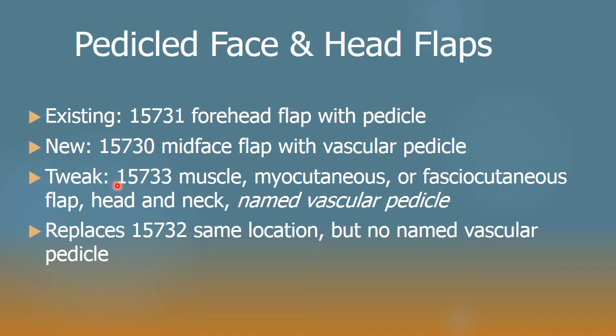There is a new code 15733, which is a muscle, myocutaneous, or fasciocutaneous flap for the head and neck — somewhere besides the forehead or mid-face — and now, as of 2018, built into the descriptor is a named vascular pedicle. This replaces 15732, which was the same location, head and neck, and actually contained the same terminology regarding vascular pedicle, such as the temporalis, masseter muscle, and sternocleidomastoid. I presume this may compel us to insist the pedicle be named to use that code.